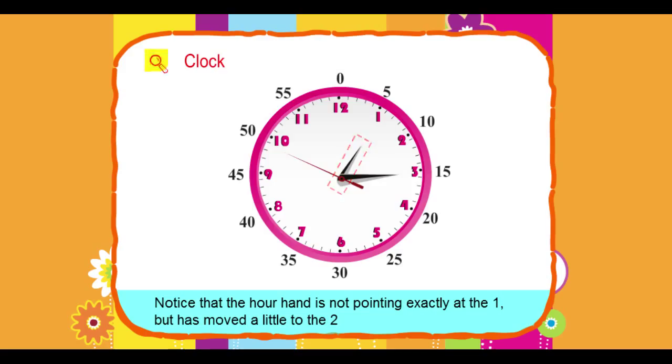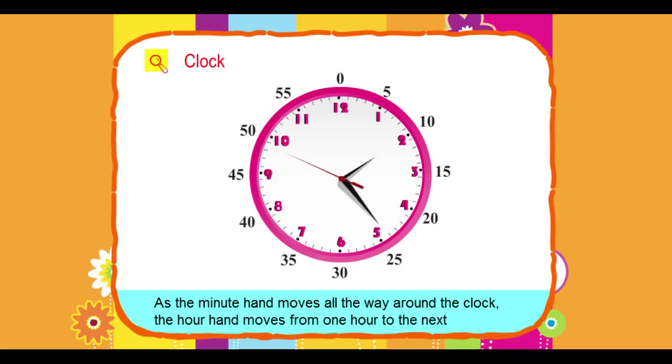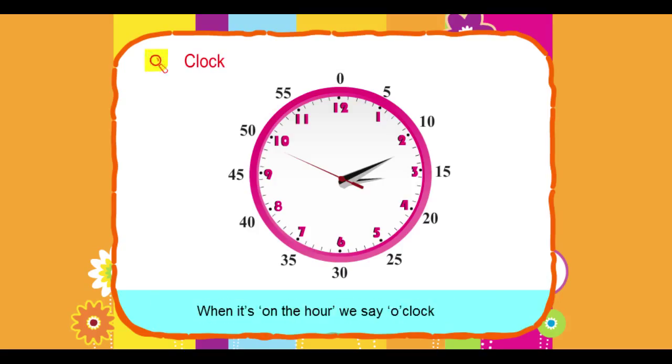Notice that the hour hand is not pointing exactly at 1 but has moved a little toward the 2. As the minute hand moves all the way around the clock, the hour hand moves from one hour to the next. When it is on the hour, we say o'clock.